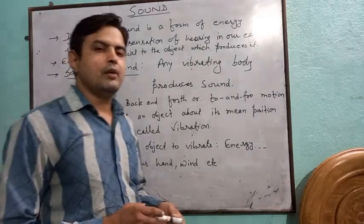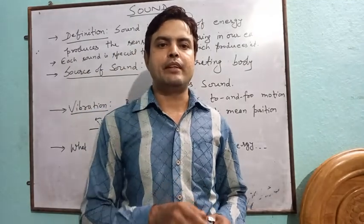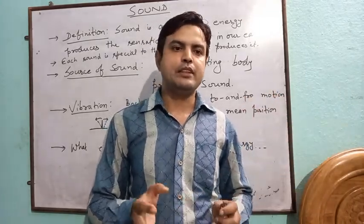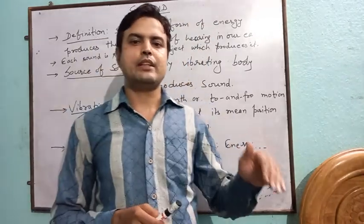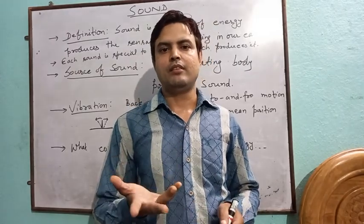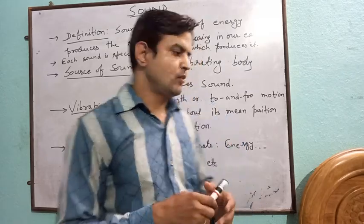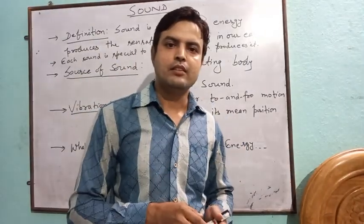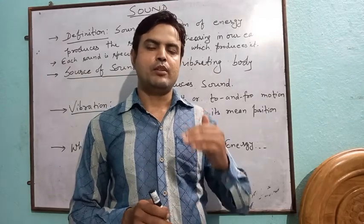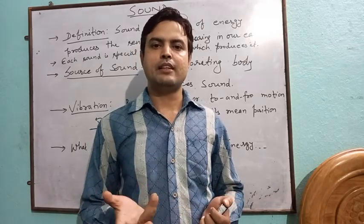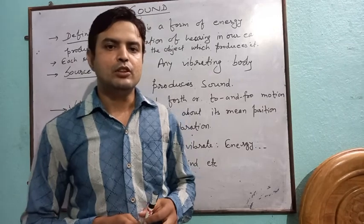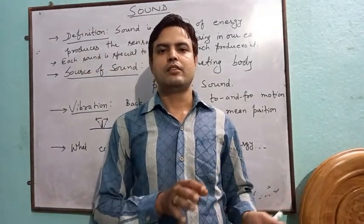What causes an object to vibrate? To make an object vibrate, we require energy. This energy may come from our hand — as we pull the iron rod to one side and release it, we supply it energy and it starts vibrating. Or it may be wind — wind passing through a floor produces sound. Or it may be electricity — as we press an electric bell, it starts vibrating and hence produces sound.